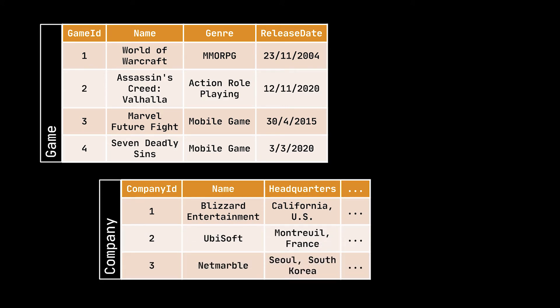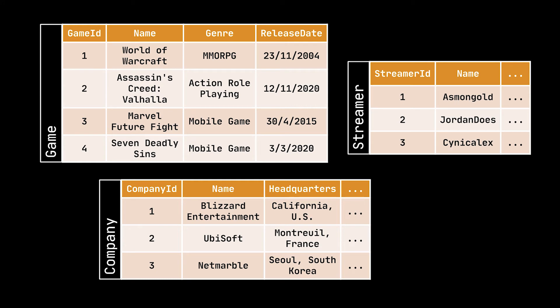And the streamer table, which stores information related to several game streamers. You see, a game is developed and published by a certain company, and it is played or streamed by a streamer. The streamer can play one or several games, and the same game can be streamed by multiple streamers.